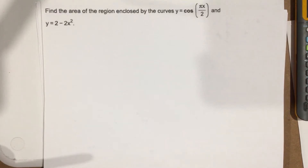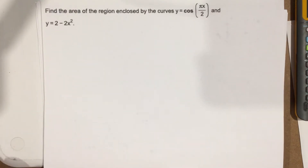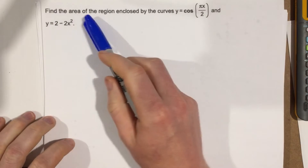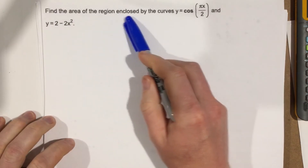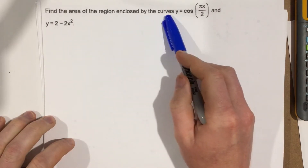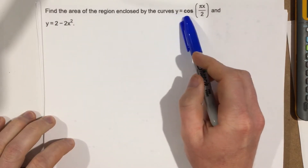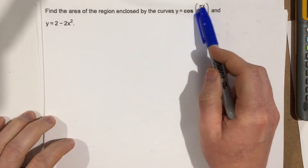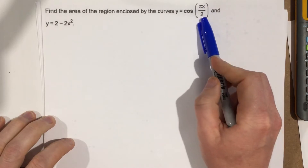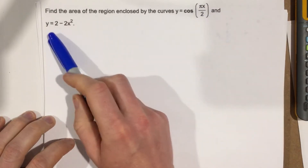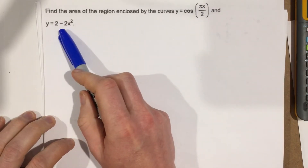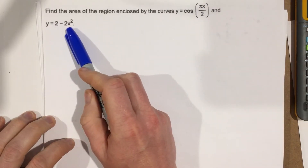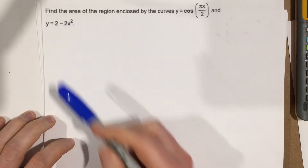This is problem number 8 from section 5.6. It wants us to find the area of the region enclosed by the curves y equals cosine of pi x over 2 and y equals 2 minus 2x squared.